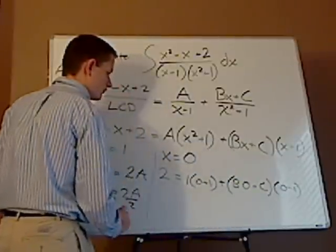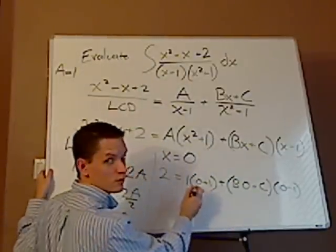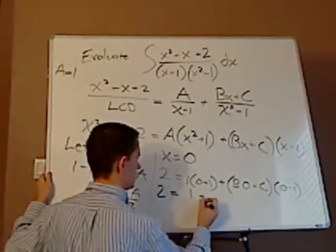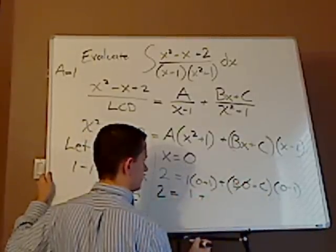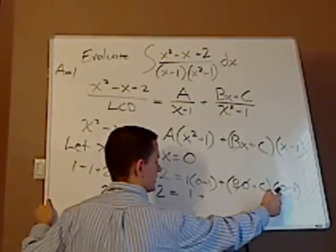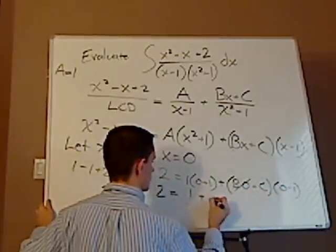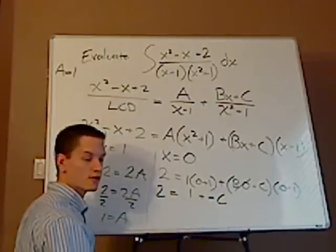and this is going to give me 0 minus 1. When I simplify all of that, 0 plus 1 is 1. So this is 2 equals 1. This cancels out, because that's just b0. b0 is something different. And then you have c, and then 0 minus 1 is minus 1. So it's just a negative c.